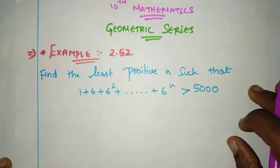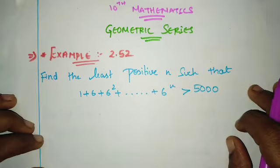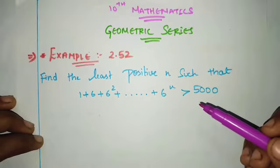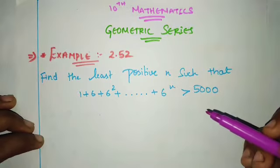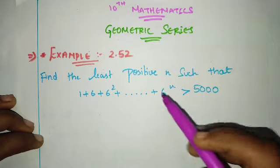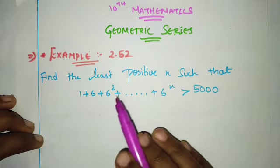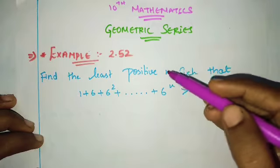Hi my dear students, welcome to Awesome Math. This is Suhasini. In this video, we'll cover a geometric series related example. Example 2.52: Find the least positive n such that 1 plus 6 plus 6 square plus up to 6 power n is greater than 5000.